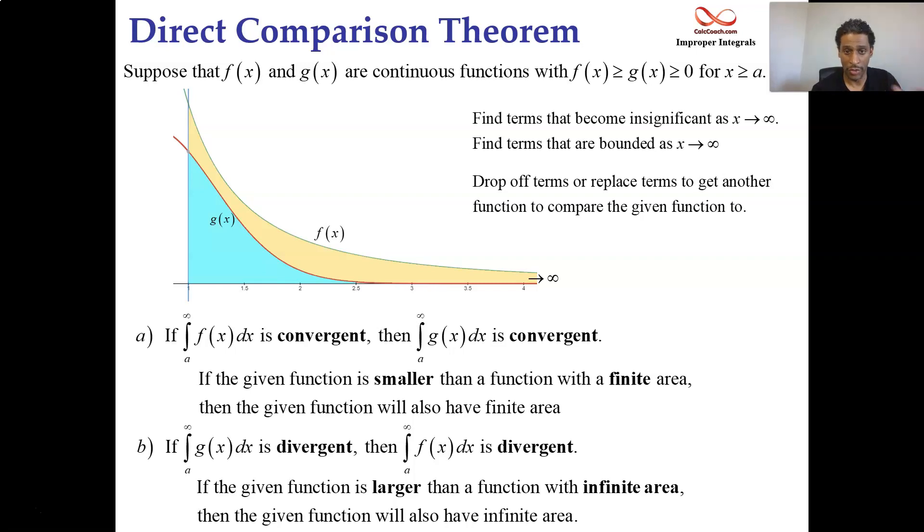What's coming next is we're going to have two examples. I'm going to go through them with you. We need f to be the bigger one and f to converge to say that g converges. Or we need g to be the smaller one and g to diverge to say that f also diverges. So we'll have one of each type here in these two examples.